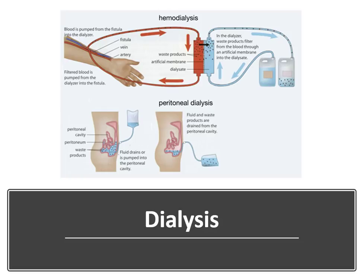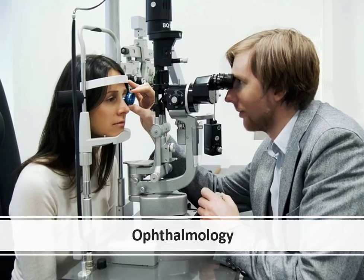I highly recommend reviewing the ESRD codes. Codes 90951 to 90962 are reported once per month to distinguish age-specific services related to ESRD. There are codes for ESRD by a qualified healthcare professional in a facility setting, and also codes such as 90966 for home dialysis. The age, number of visits, type of dialysis, and where services are rendered are all important for code assignment.